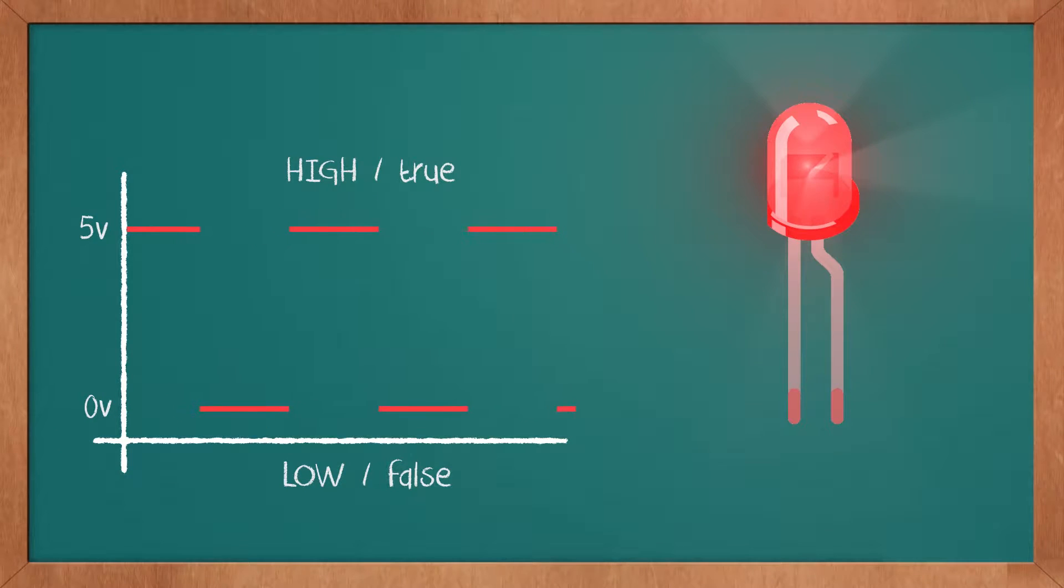In many boards the high level is 3.3 volts. Although the Arduino can read and write these digital signals, not all devices work with digital logic.